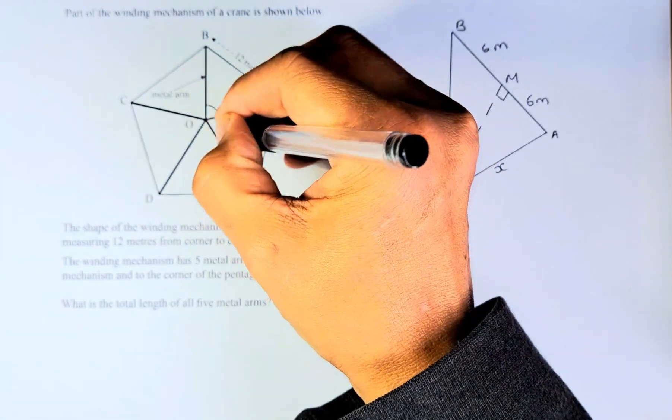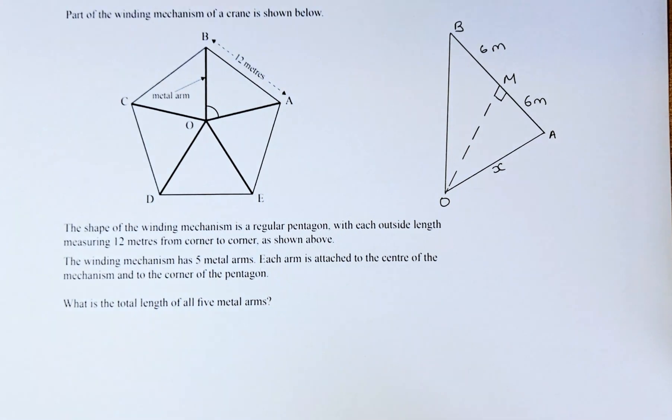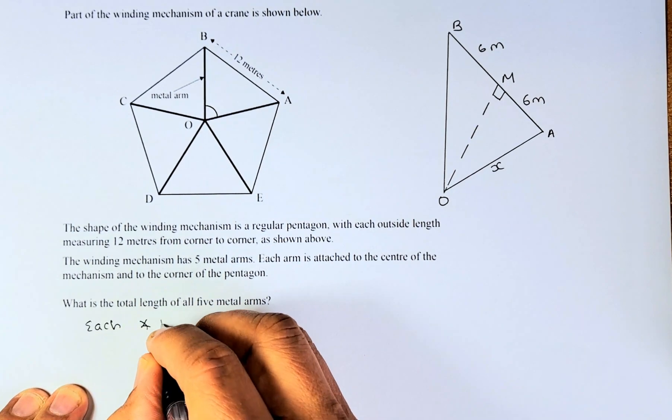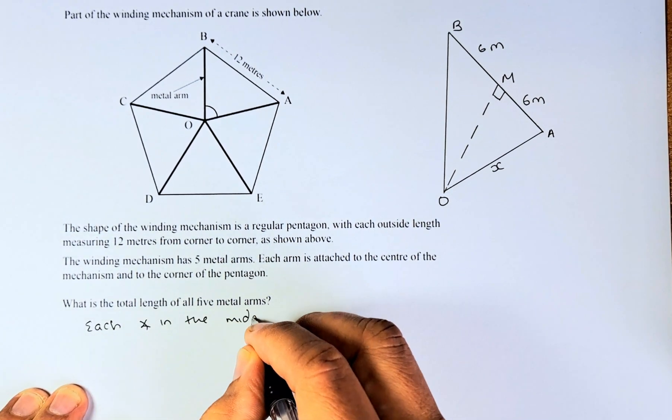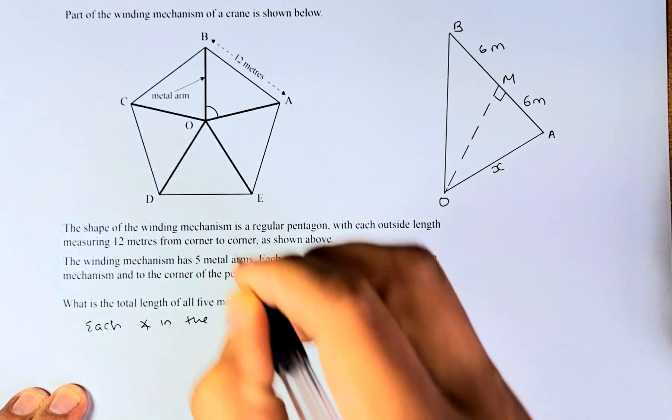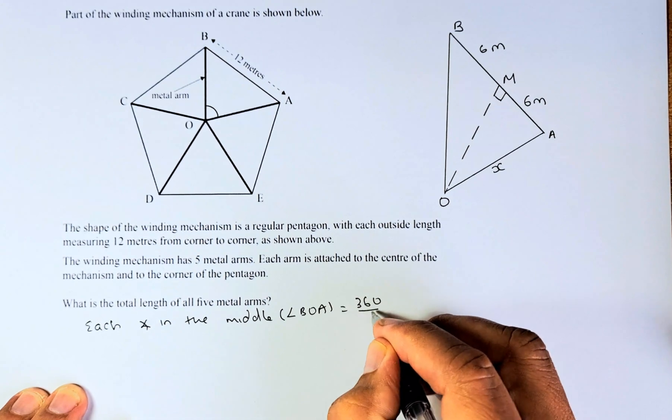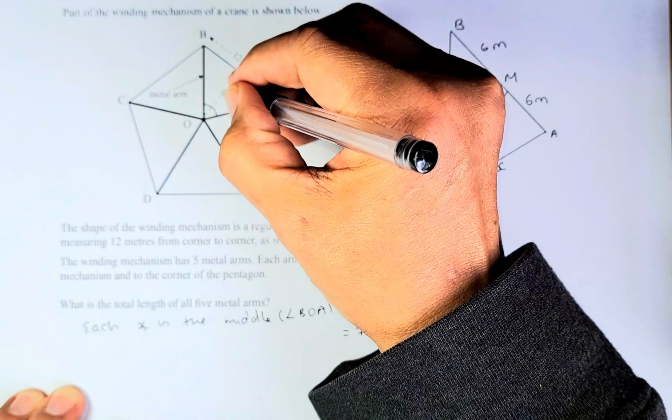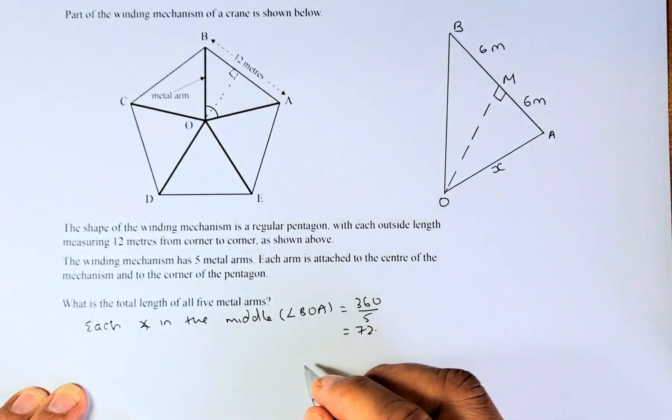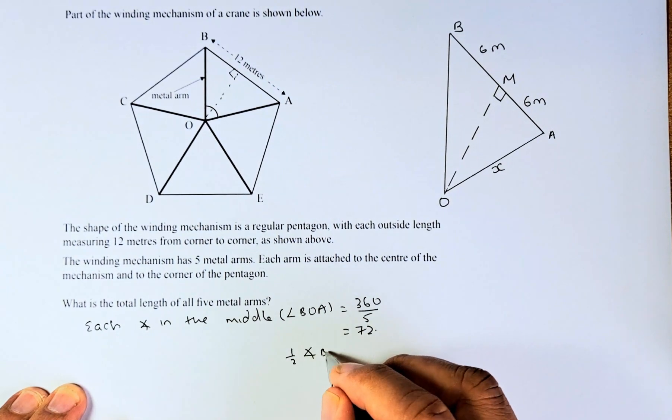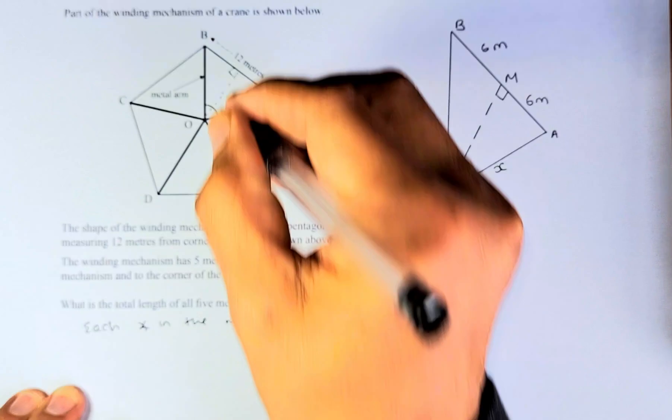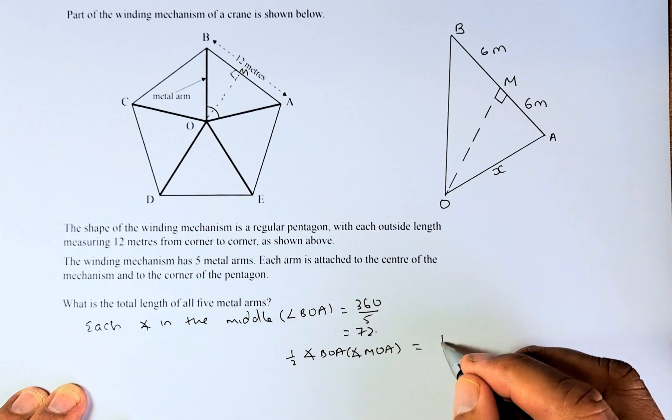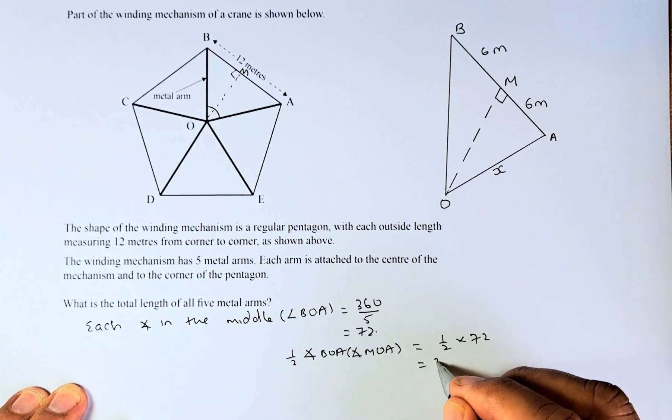If the total is 360, you take 360 divided by 5. So each interior angle in the middle, we are going to put that angle as angle BOA. That angle there is going to be 360 divided by 5 and that is going to be 72. If you are going to break them up into half, so each angle is going to be half of angle BOA, or also called angle MOA, is going to be half of 72, and that will be 36 degrees.